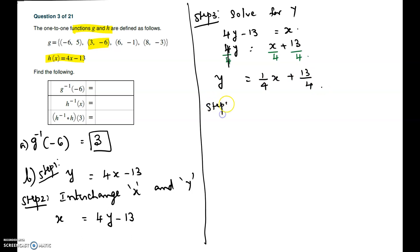The last step is to rewrite y as h inverse of x. So we have to write h inverse of x = (1/4)x + 13/4.